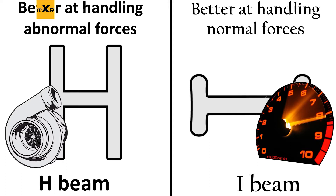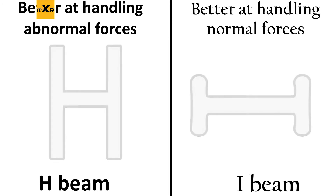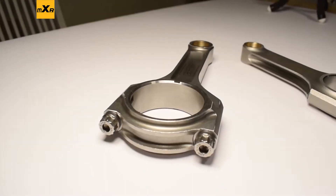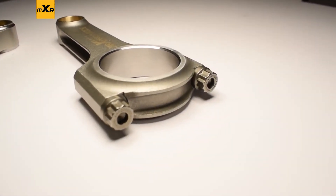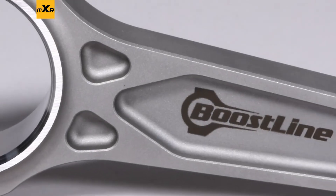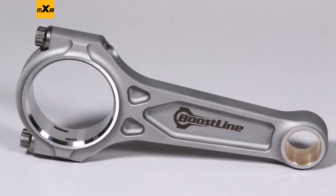Again, this is a massive oversimplification and it's really just a rule of thumb, because you can create provisions in the design of both the I-beam and H-beam to make them really good at resisting both normal and abnormal forces. Here's an example of a modern I-beam design that has proven itself capable of being both lightweight and pretty good at handling forced induction as well as high RPMs. Although it's an I-beam, you can see it incorporates some interesting design provisions to resist different types of forces.